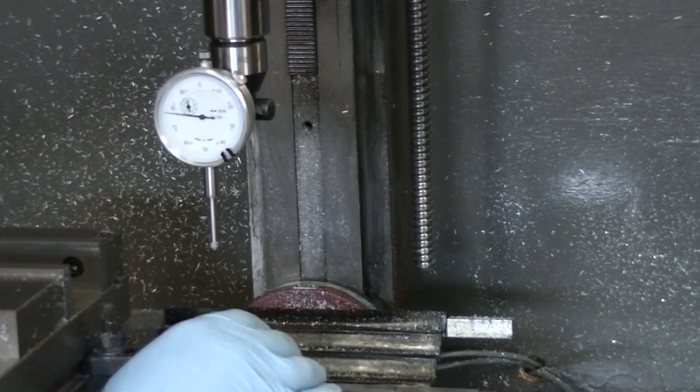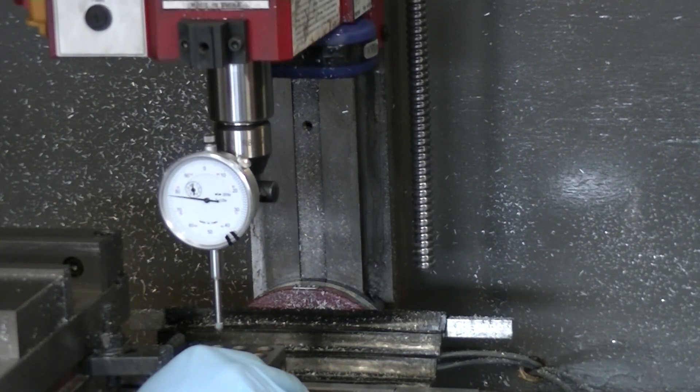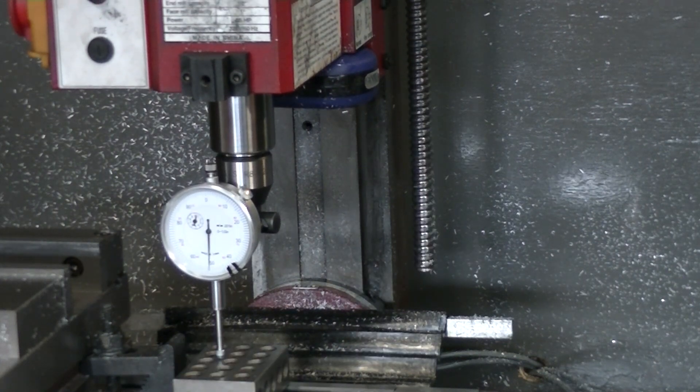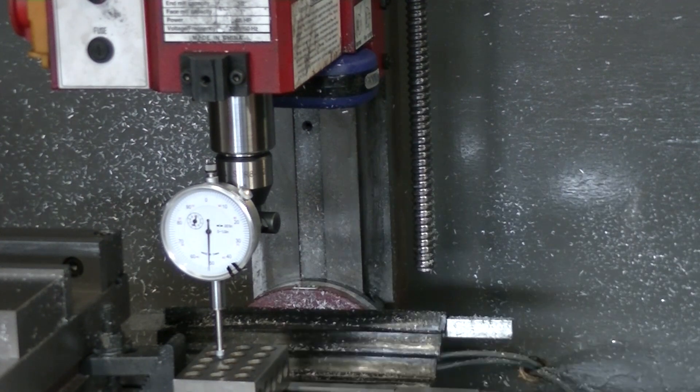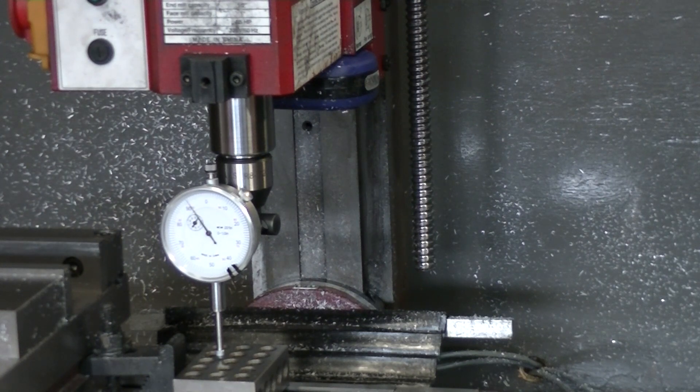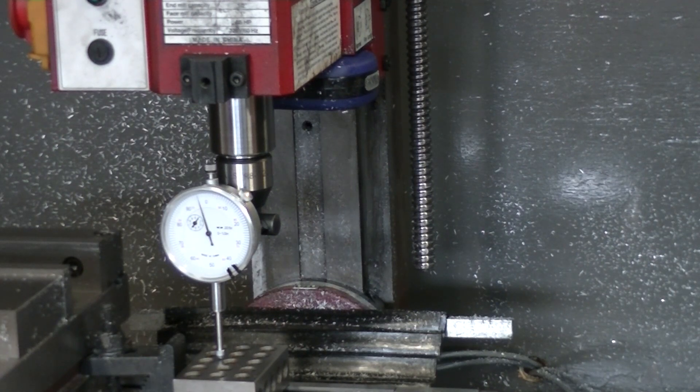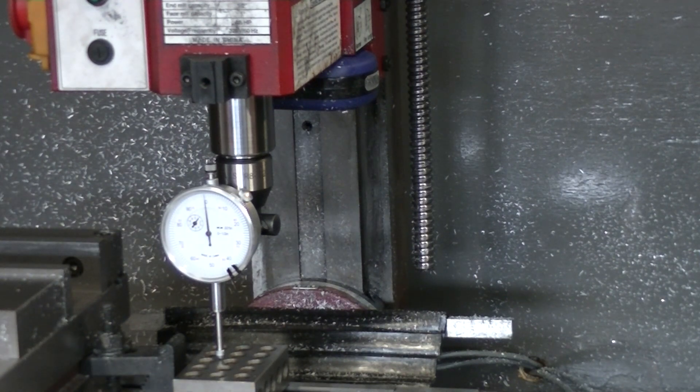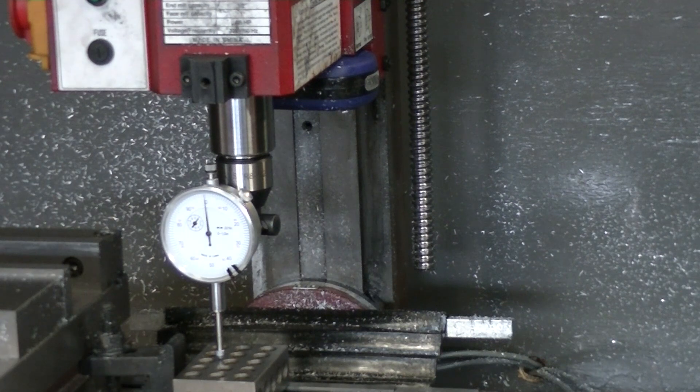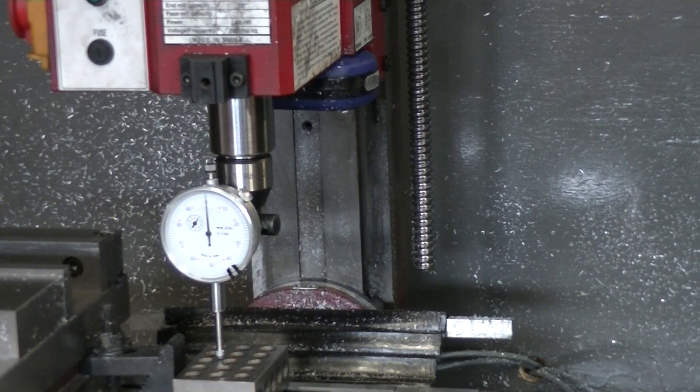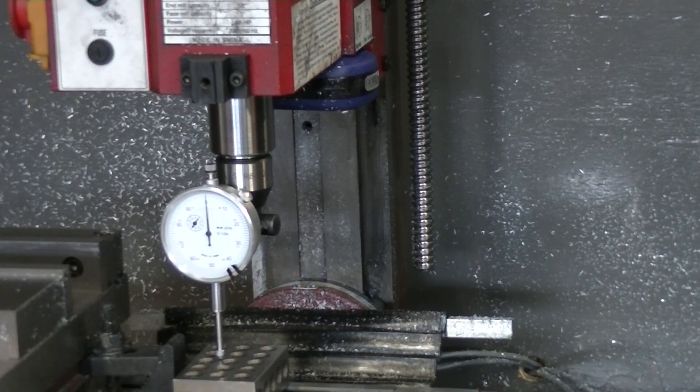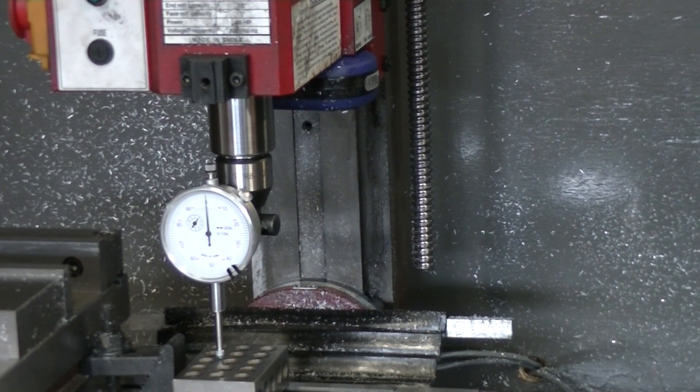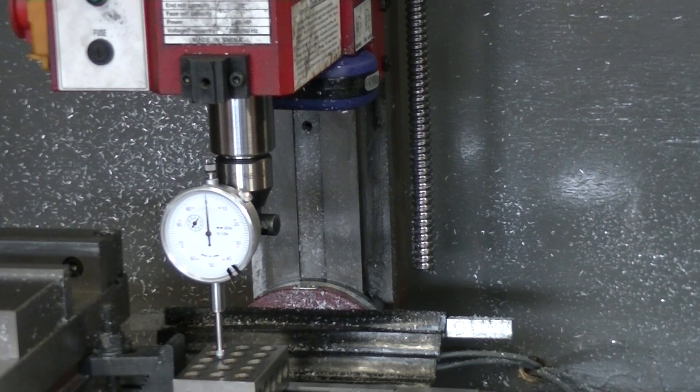So I bring it down. Any time you're using a test indicator, you want to have some preload on it. So I start, I wrap it, then I go 10 at a time, get close. Then I go to my thousands, and I'm coming one at a time. I'm almost there. Now I'm going to go to 10 thousandths. There we go. Way more accurate than what this thing can really do, but it's showing me directly on 0.